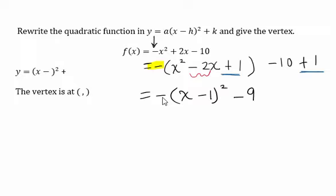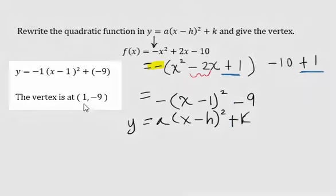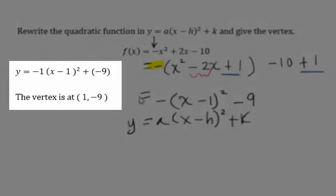Next, we can easily select the coordinates of the vertex, since this is in standard form. So h is 1, and k is negative 9, and therefore the vertex is the ordered pair (1, -9).